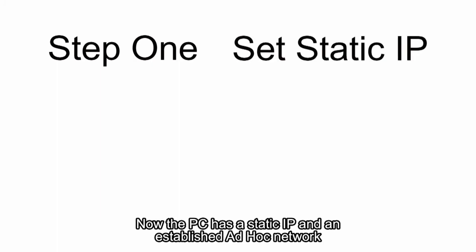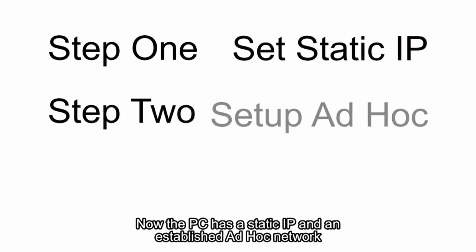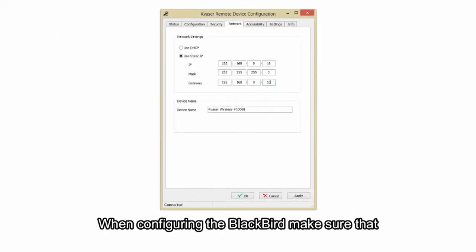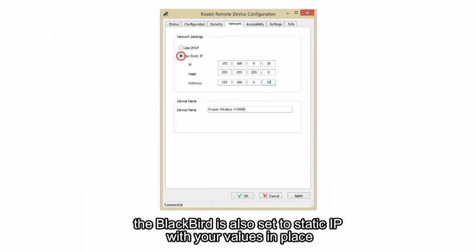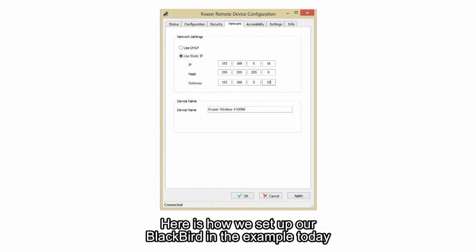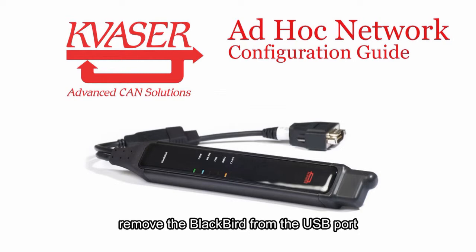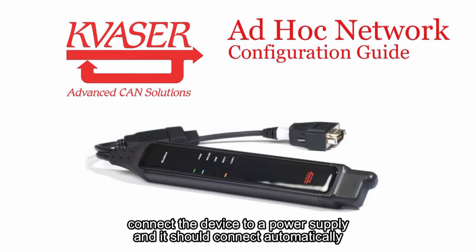Now the PC has a static IP and an established ad-hoc network, so you are ready to set up the Blackbird. When configuring the Blackbird, make sure that it is also set to static IP with your values in place. Here is how we set up our Blackbird in the example today. Once you've verified that the ad-hoc network is still on, remove the Blackbird from the USB port, connect the device to a power supply, and it should connect automatically.